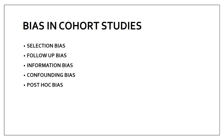Biases in cohort study include: selection bias (not selecting subjects properly), follow-up bias (not maintaining proper follow-up), information bias (not collecting information properly), confounding bias (same as in case-control study), and post-hoc bias. Post-hoc is a Latin term meaning 'after the event' — it involves generating a hypothesis based on already-observed data, which can lead to unwanted conclusions.